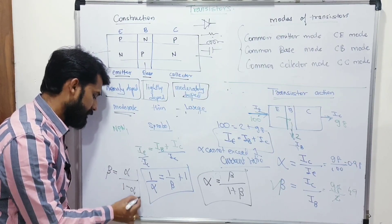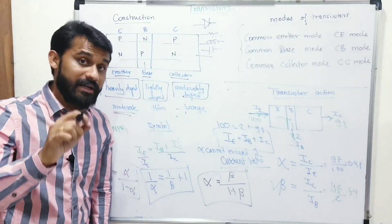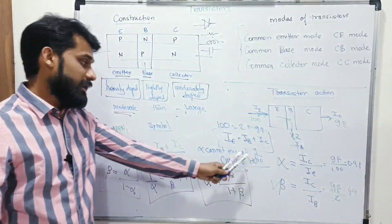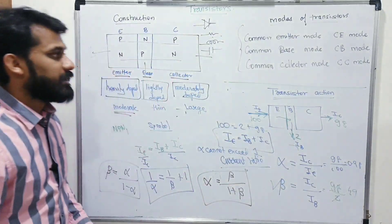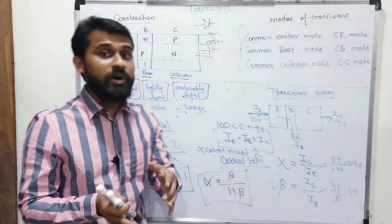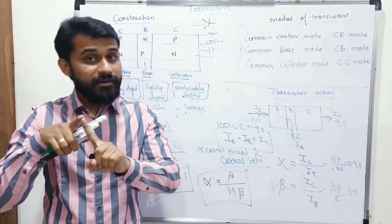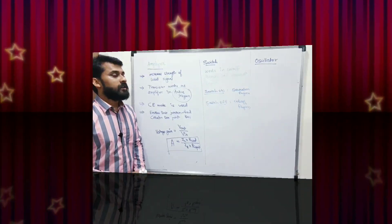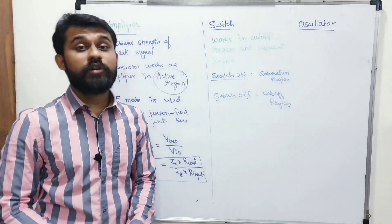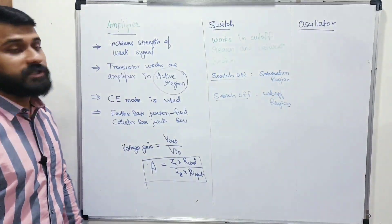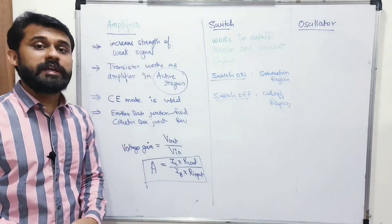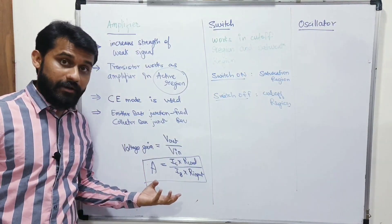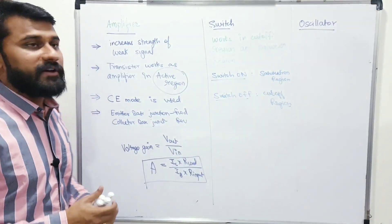In 2018 MHT CET, there was a question on this particular equation. Now the transistor has three applications: as an amplifier, as a switch, and as an oscillator. After that, the last topic is logic gates. The next three applications — amplifier, switch, and oscillator — are all important from an MCQ point of view. Questions on these have appeared in 2018 CET.